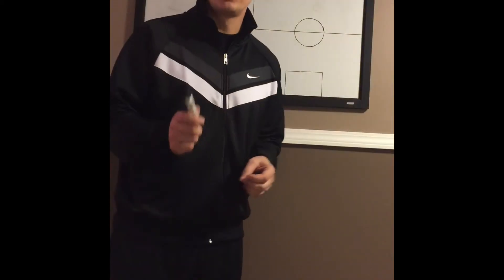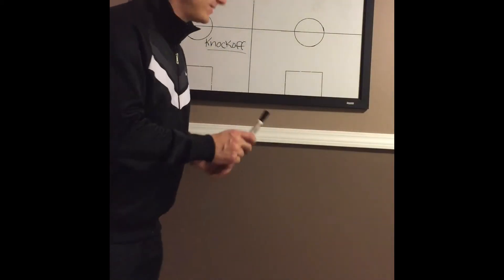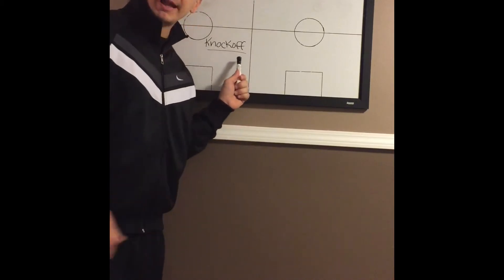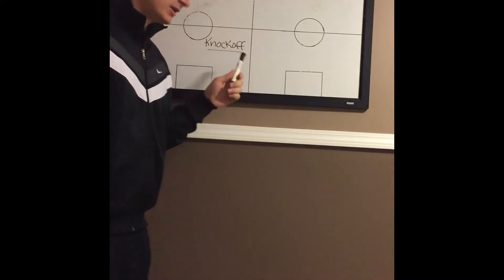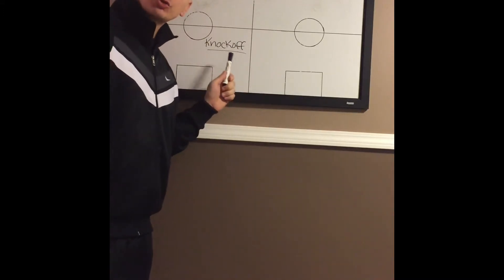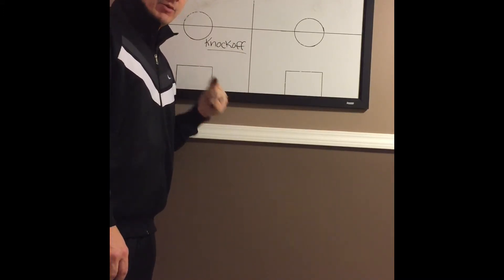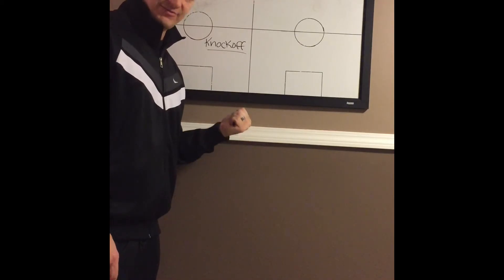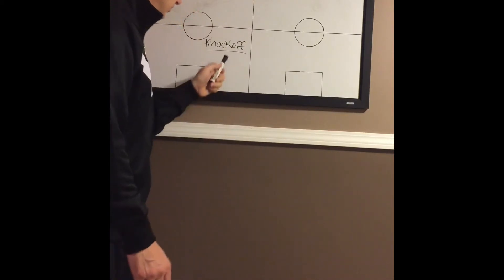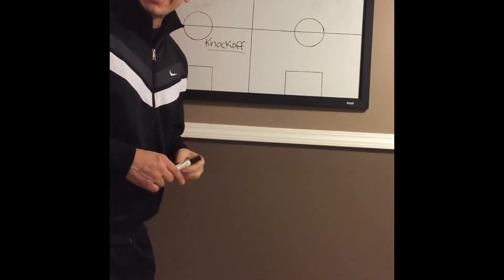Let's go to the board and I'm going to draw up one of my favorite ATO plays. The first thing I like to do in a timeout situation is write the name of the play on the board. For your higher basketball IQ team members, this is the only trigger they will need — they will know their responsibilities and the design of the play. Here we go: Knockoff.